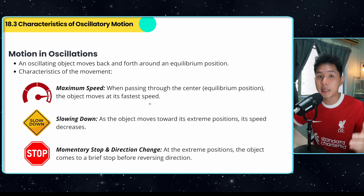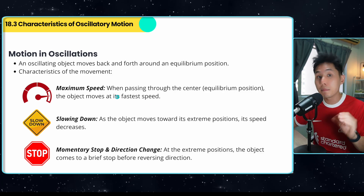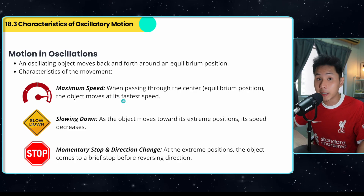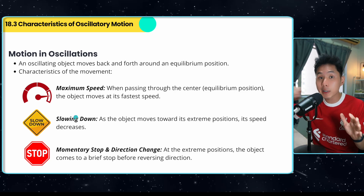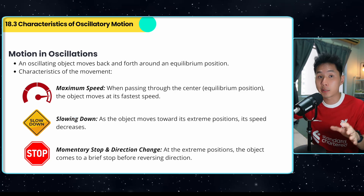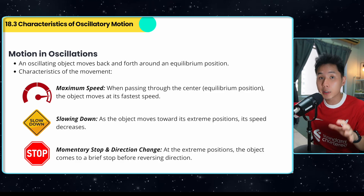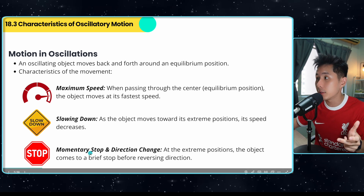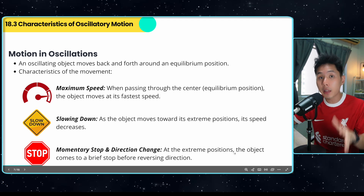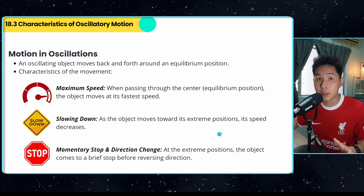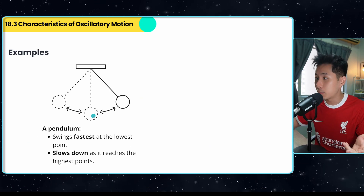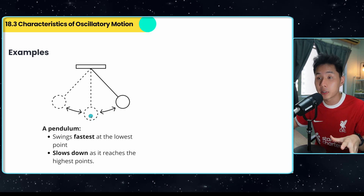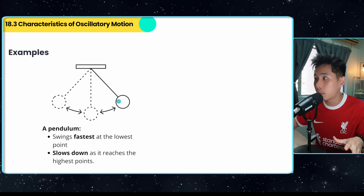Here are a few characteristics of oscillations. First, they achieve maximum speed when they pass through the equilibrium position. They slow down when they move to an extreme position — for example, in a pendulum, they slow down until they reach the maximum before changing direction. They stop at the extreme position before reversing direction. For example, the pendulum swings fastest at the lowest point, which is the equilibrium position, and slows down as it reaches the highest point.